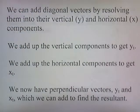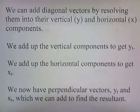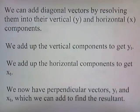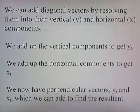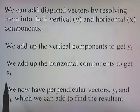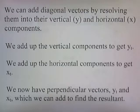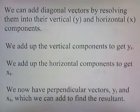We can add diagonal vectors by resolving them into their vertical y and horizontal x components. We add up the vertical components to get yt, the total y. We add up the horizontal components to get xt, the total horizontal components. So we now have perpendicular vectors yt and xt, which can be added to find the resultant.